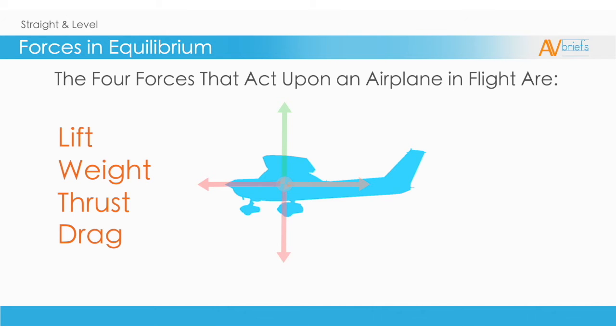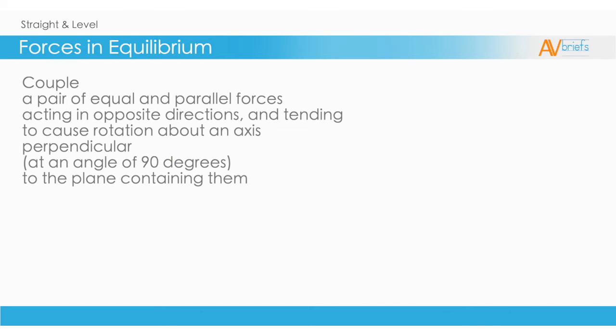These forces are designed by our friendly engineers to work in certain ways together. To really understand this, let's look at another word, which is a couple. A couple for our interest is a pair of equal and parallel forces acting in opposite directions and tending to cause rotation about an axis. It acts perpendicular, which is to say at 90 degrees, to the plane controlling them.